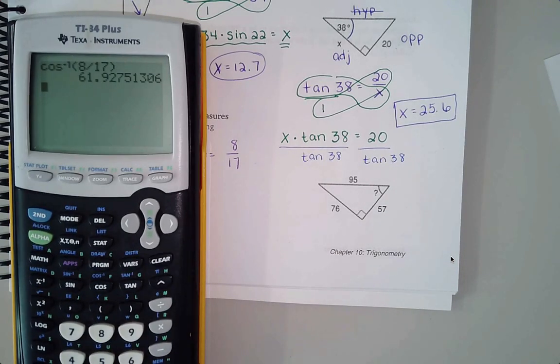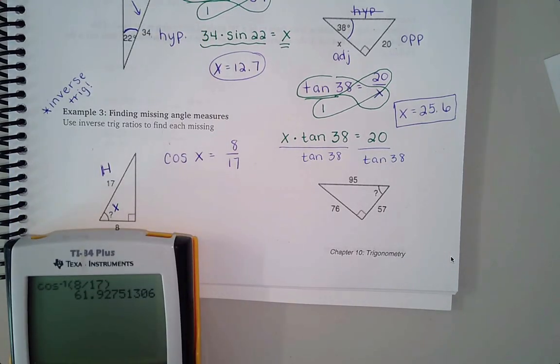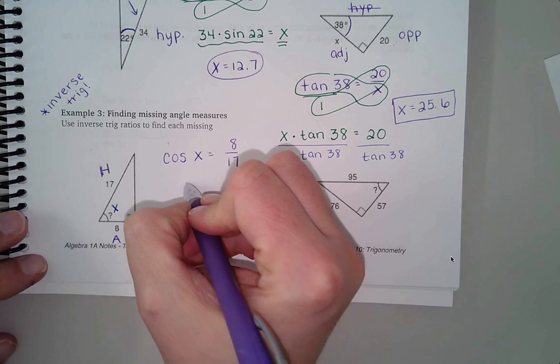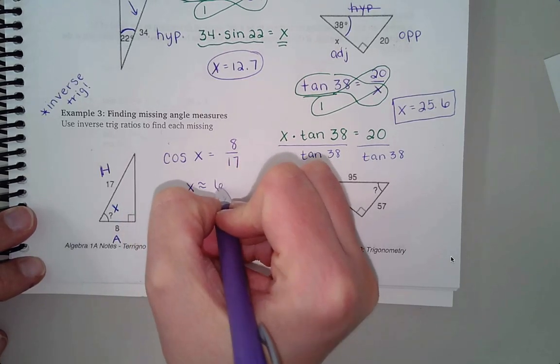And your calculator is going to tell you it's 61.9 degrees. I think we're rounding to the nearest whole number. Oh, looks like the directions got cut off a little bit. We are rounding to the nearest whole number. So I would say that x is approximately 62 degrees.